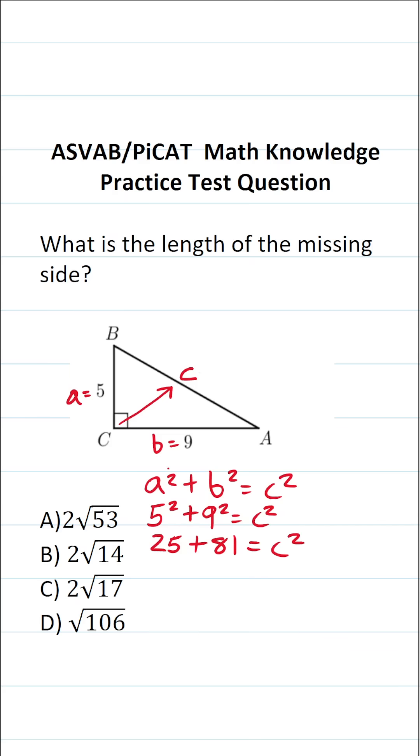Let's go ahead and add these together off to the side. We have 81 plus 25. Five plus one is six. Eight plus two is gonna be 10. So this becomes 106 equals c squared.